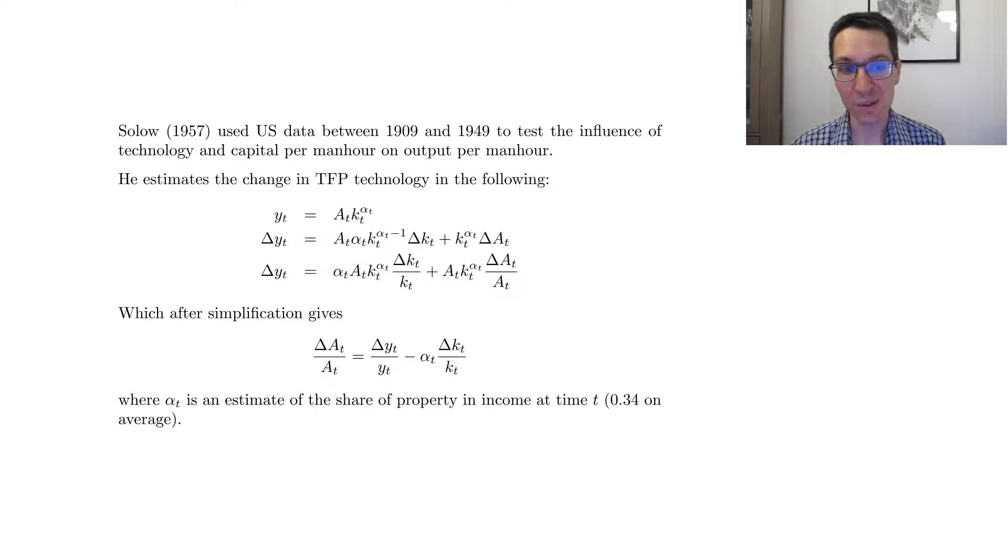One of the earliest and most famous of such exercises was done by Robert Solow in 1957. So he used US data between 1909 and 1949 to test the influence of technology and capital per man-hour on output per man-hour. So what's amazing is, first of all, that the US already had very good data back then that allowed for such project.